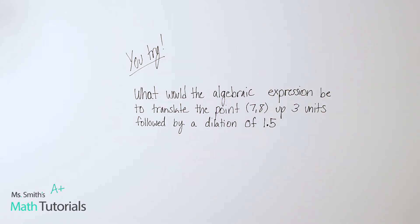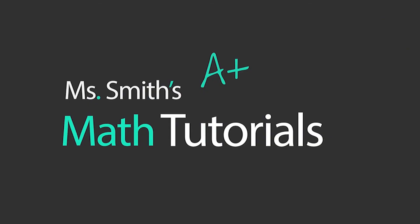You guys try this one. What would the algebraic expression be — so that means the rule, the (x, y) becomes — to translate the point (7, 8) up 3 units followed by a dilation of 1.5? Don't let the fact that it's a decimal confuse you — it works the same way. If you get stuck, refer back to that first problem; it's very similar. Give me one algebraic representation for those two transformations. This has been Miss Smith's Math Tutorials.